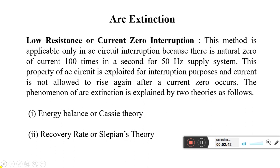What we do is apply a process such that whenever current reaches zero position, there should be no arc development between the contacts of the circuit breaker — that is our objective. The phenomenon of arc extinction is explained by two theories. The first is called the energy balance or Cassie theory, and the second is called the recovery rate or Slepian theory. We will discuss each one.